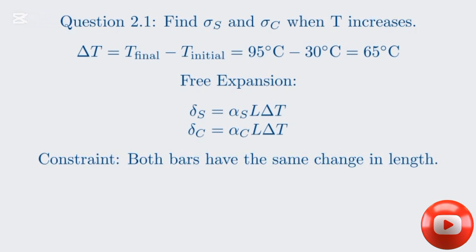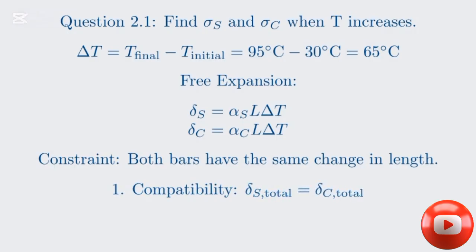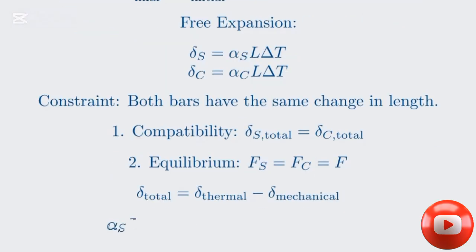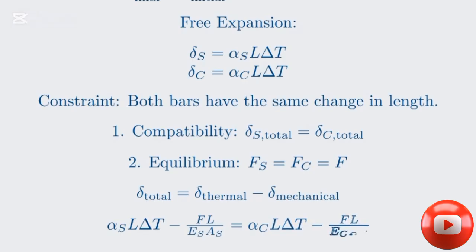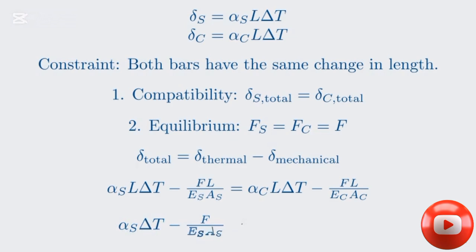We can set up two key equations based on the rigid constraint and equilibrium. First, the change in length for steel must equal the change in length for copper. Second, because the system is fixed, the internal forces must balance out to zero — the force in steel must be equal and opposite to the force in copper. The total change in length for each material is its free thermal expansion minus the contraction caused by the internal force. For steel: alpha_S × L × delta T minus F×L/(E_S×A_S). For copper: alpha_C × L × delta T minus F×L/(E_C×A_C). Since L appears on both sides, we can divide it out, giving: alpha_S × delta T minus F/(E_S×A_S) equals alpha_C × delta T minus F/(E_C×A_C).